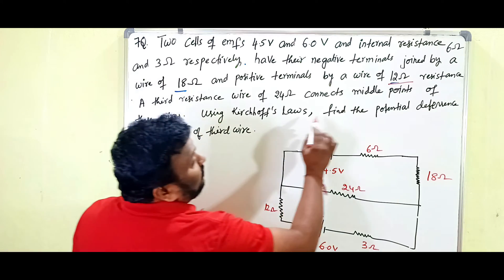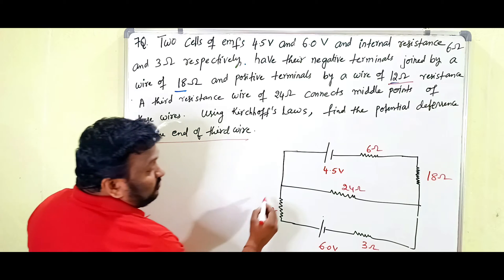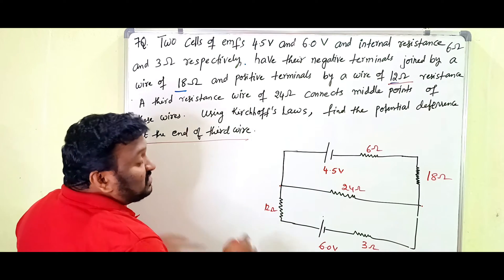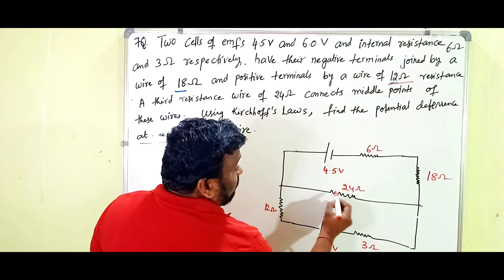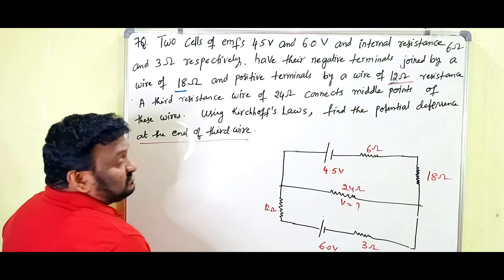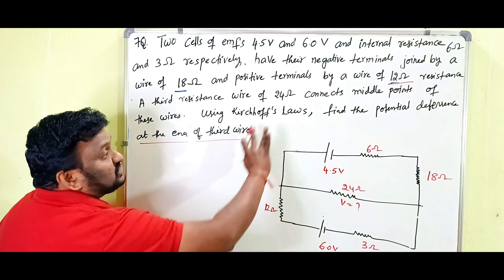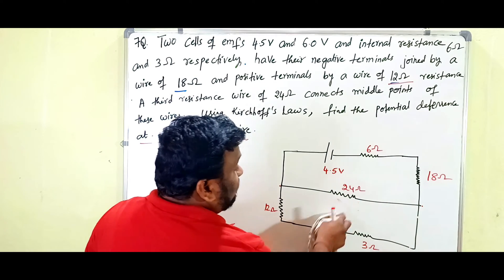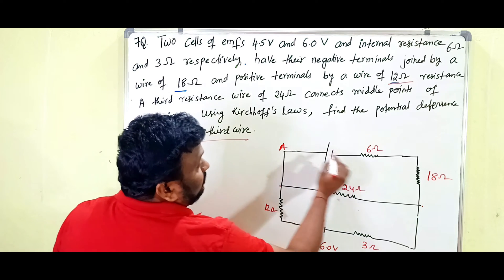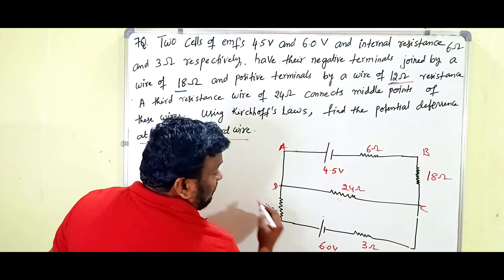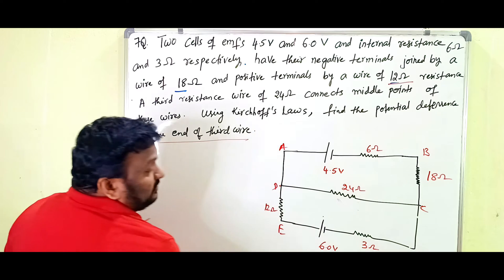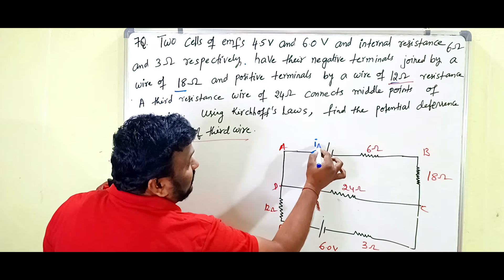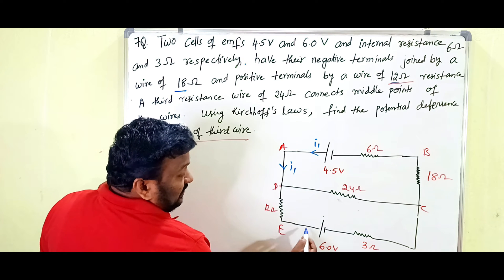Using Kirchhoff's Laws, we have to find the potential difference between the two ends of the third wire — this is one end and this is the other end. We have to apply Kirchhoff's Second Law to the loops. We label the nodes as A, B, C, D, E, F. This is the first cell, so current i1 flows through it.